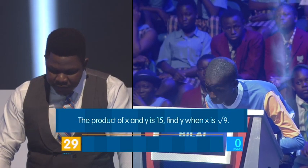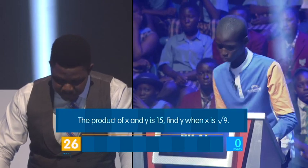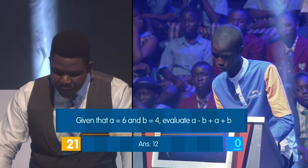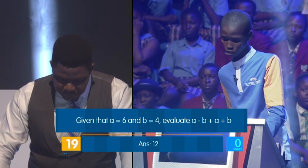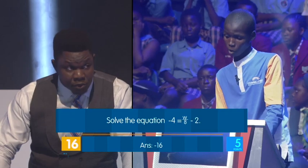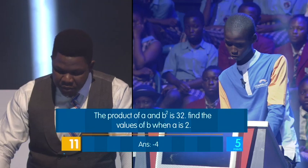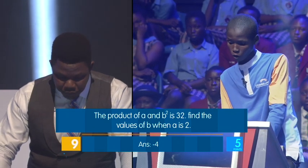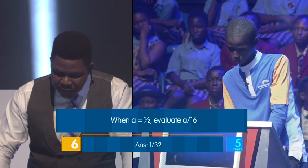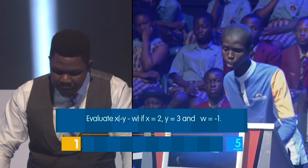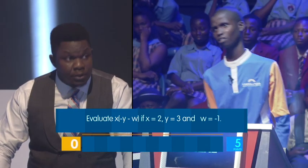Bilal, I wish you all the best. Your 30 seconds of fame starts now. The product of x and y is 15. Find y when x is equal to the square root of 9. Skip. Given that a is 6, b is 4, evaluate a minus b plus a plus b. 12. Correct. Solve the equation minus 4 is equal to w over 8 minus 2. Minus 48. Incorrect. The product of a and b squared is 32. Find the values of b when a is 2. 4. When a is equal to half, evaluate a over 16. 8. Incorrect. Evaluate x bracket minus y minus... Skip. Well done.